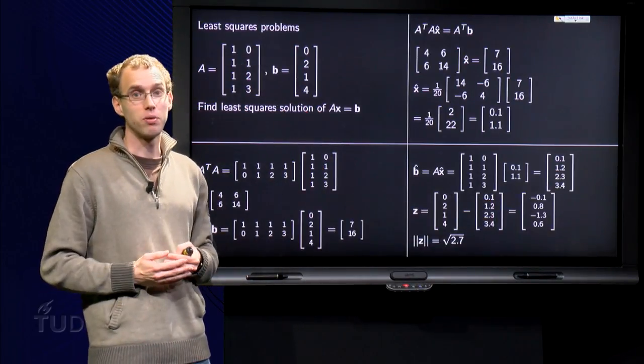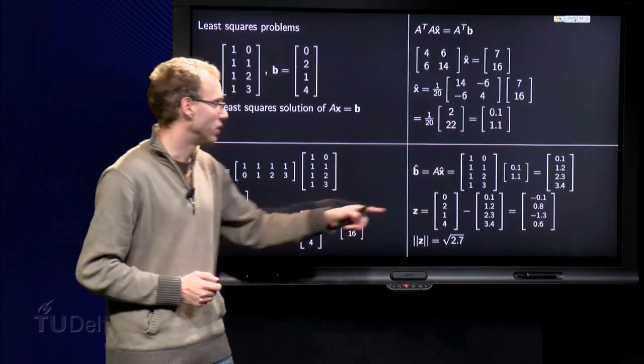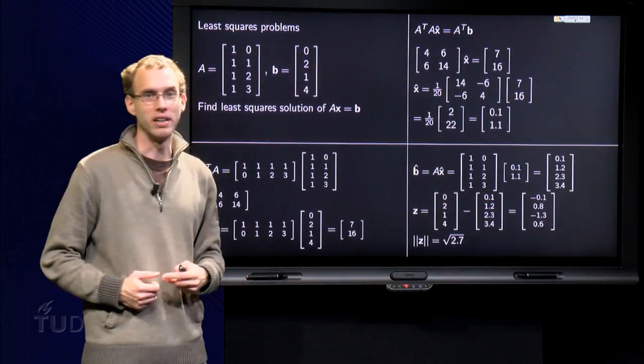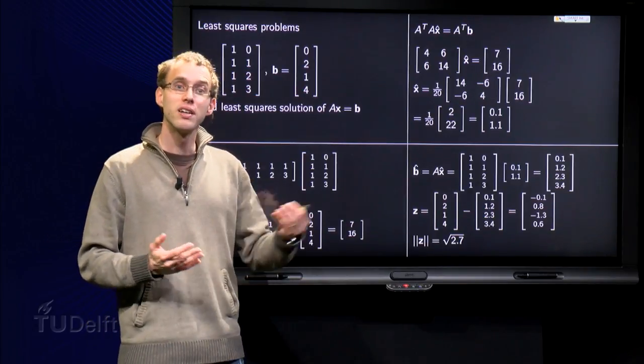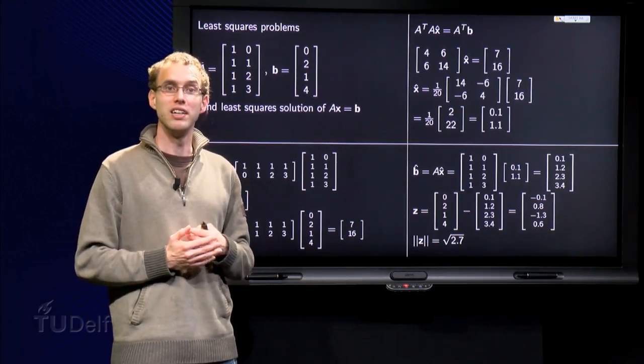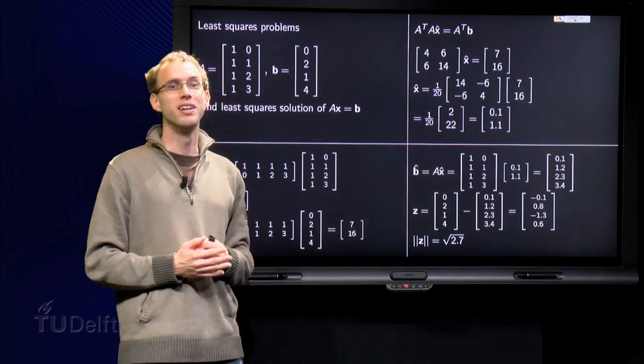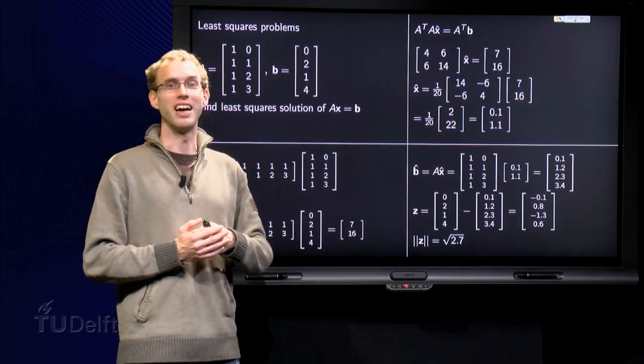And then we can compute the least squares error, which is just the length of z. That's not a nice number, but it happens to be the square root of 2.7. So now we can find our least squares solution, even if the columns of A are not nicely orthogonal.